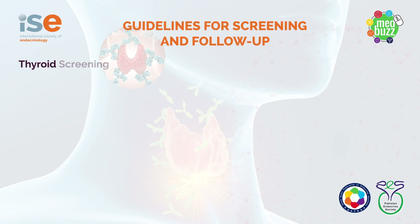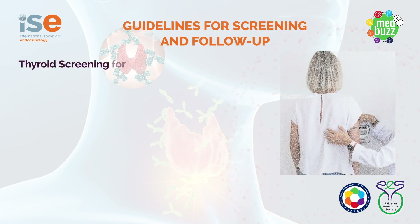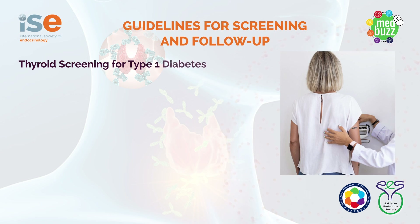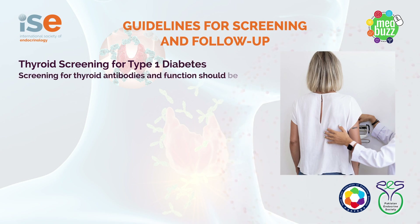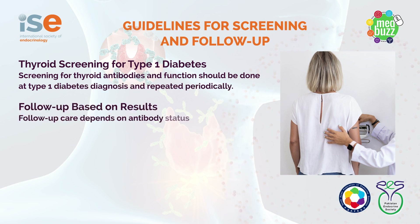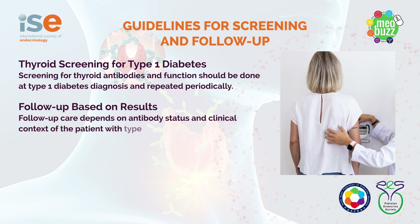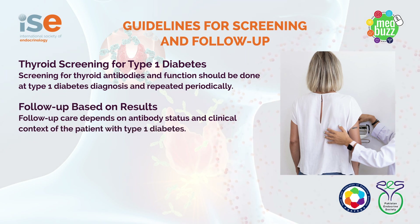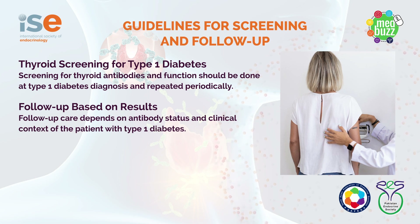There are other specific patient groups, for example those with type 1 diabetes, who may be at risk of additional organ-specific autoimmunity — i.e. coeliac disease and/or thyroid autoimmunity. Thyroid screening in type 1 diabetes is recommended in many guidelines, and the presence of antibodies may form a component of that.